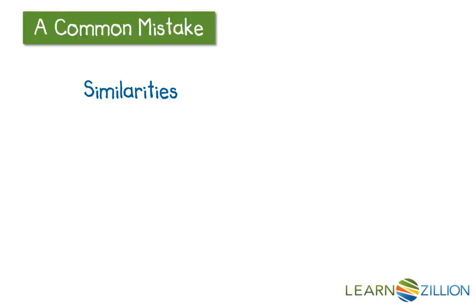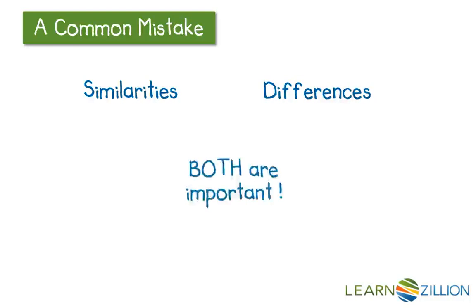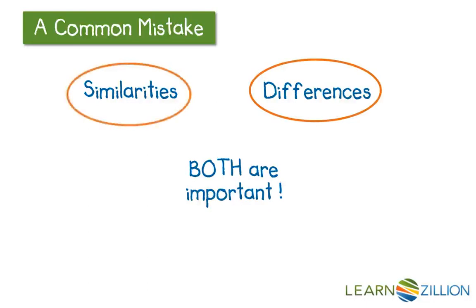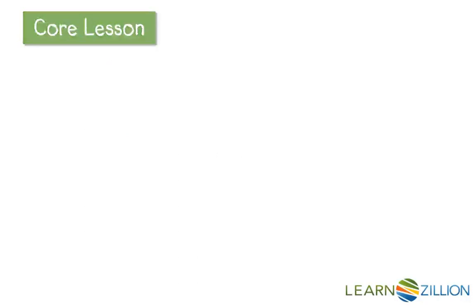A common mistake when studying this topic is looking for only similarities, or only differences, rather than both. Similarities and differences both tell readers important information about the text. Together, looking for the similarities and differences will give us a more complete picture of the details in the text.